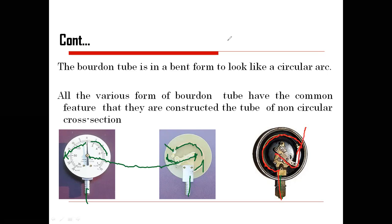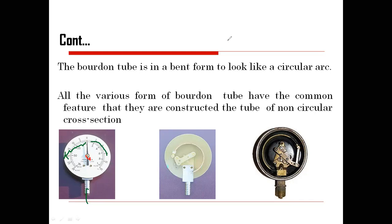Here the mechanism will try to move in the upward direction due to the applied pressure, and the gear pinion is present with the pointer connected in front. This will try to move backward, and when it moves backward the pointer deflects depending upon the pressure. If pressure is high, the pointer will deflect in the higher range. If pressure is less, the pointer will move in the lower range. I will also show this practically for better understanding.